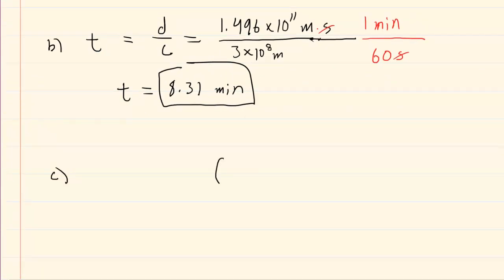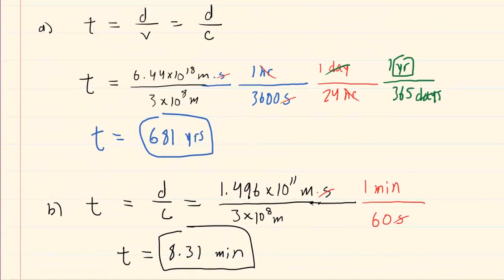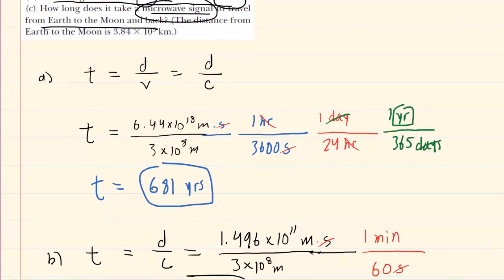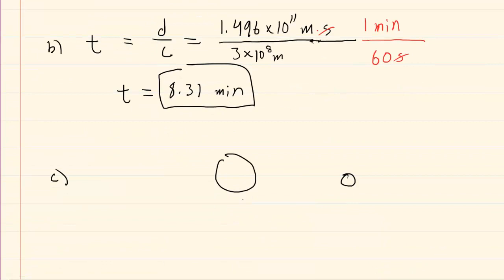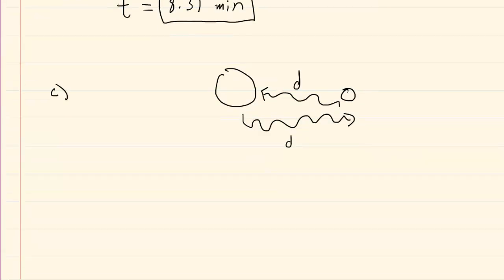But the signal is going from one object to the other and back. It's going from Earth to the Moon and then back. You can imagine the signal traveling from Earth to the Moon, bouncing off the Moon, and then traveling backwards to Earth. We'll need to take the distance between Earth and the Moon and double it. The total distance is not just D, but it's actually 2D, because the signal has to return back to Earth.